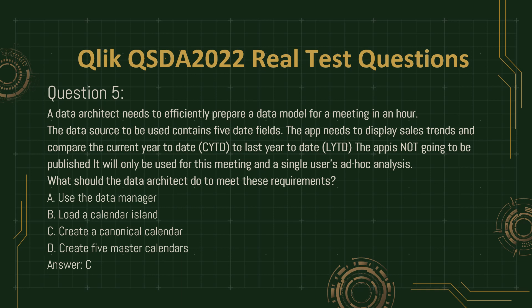Question 5. A data architect needs to efficiently prepare a data model for a meeting in an hour. The data source to be used contains five date fields. The app needs to display sales trends and compare the current year to date (CYTD) to last year to date (LYTD). The app is not going to be published; it will only be used for this meeting and a single user's ad hoc analysis. What should the data architect do to meet these requirements?